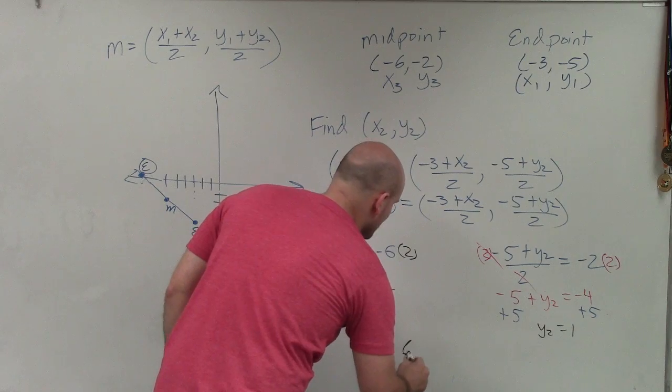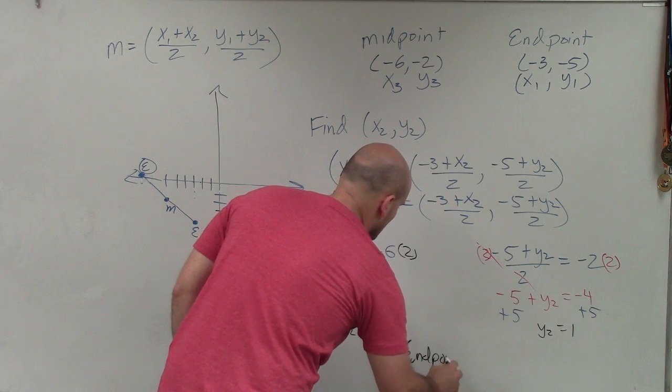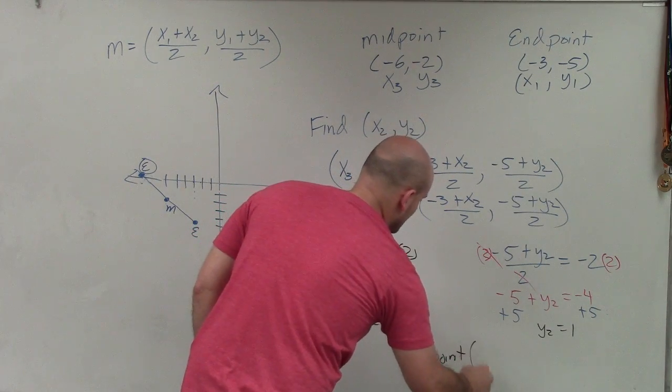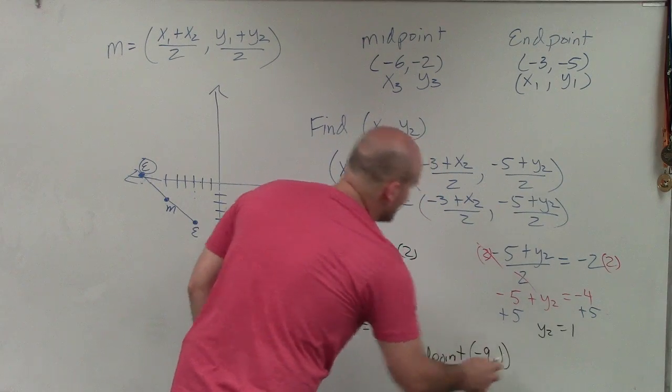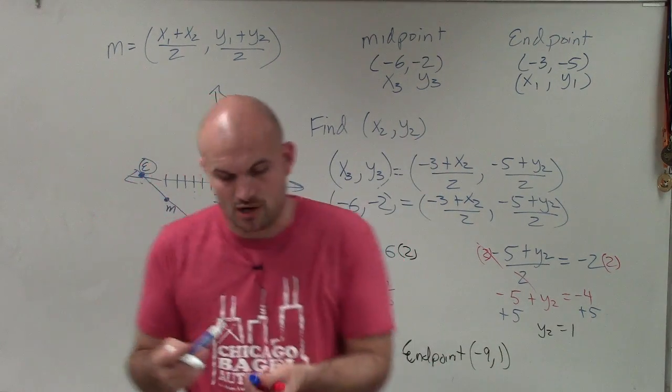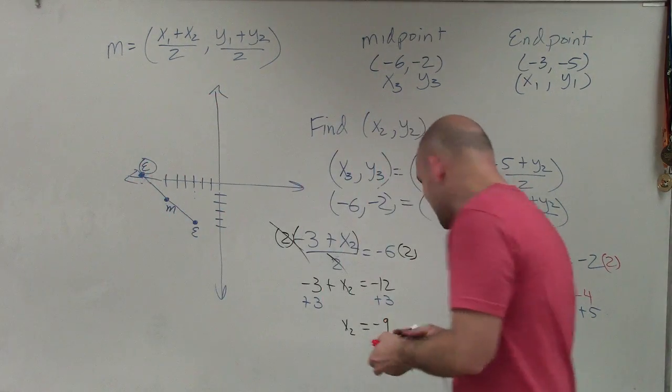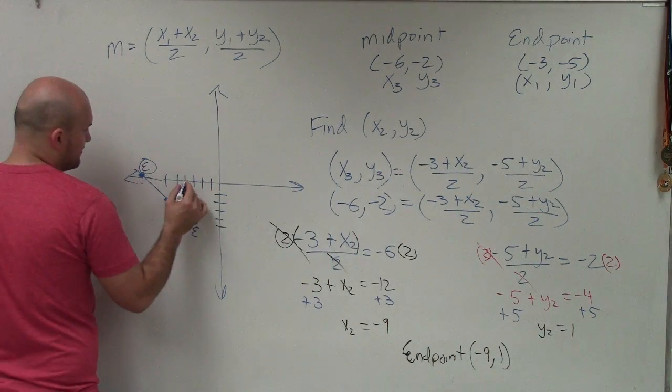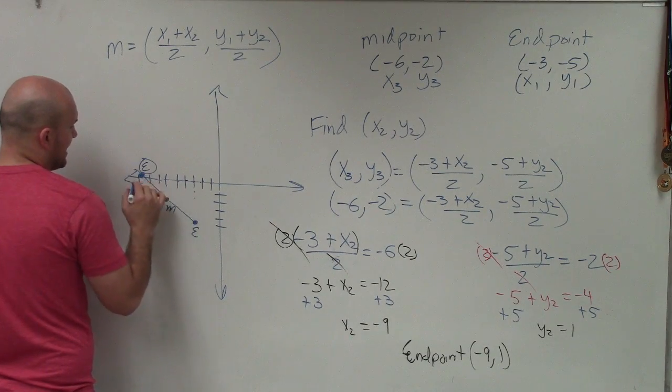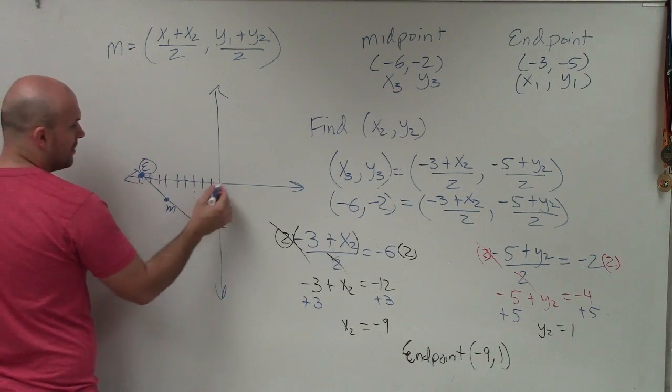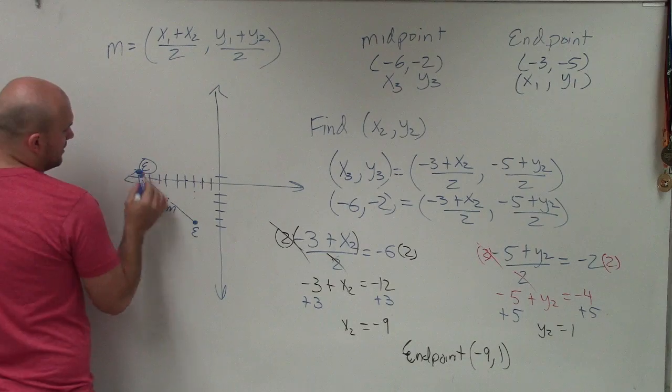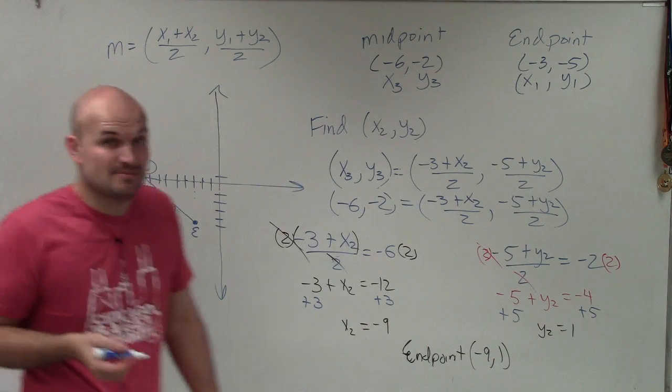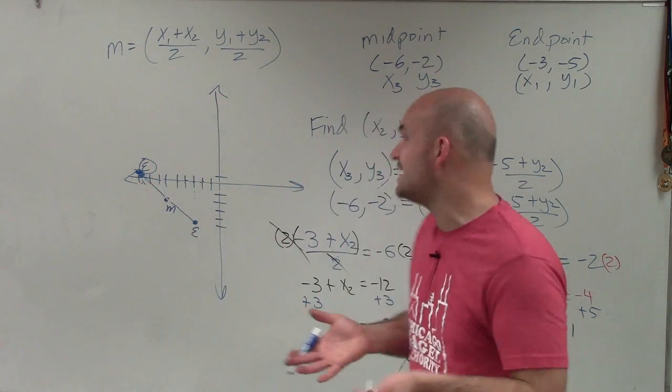So my new endpoint is going to be (-9, 1). And let's go and plot that. Let's go back to our original graph and see if that makes sense. Can we plot that point? And will it make sense? So let's go 1, 2, 3, 4, 5, 6, 7, 8, 9, roughly. And then positive 1. And so you can see, yeah, I was pretty close on my estimate. I was just a little off, but I was just sketching that in there.